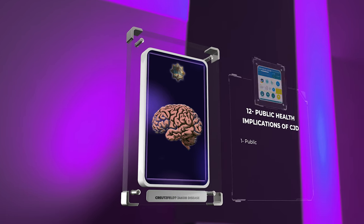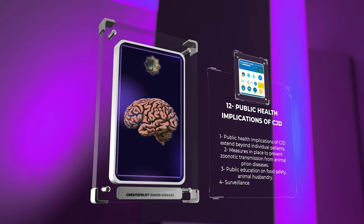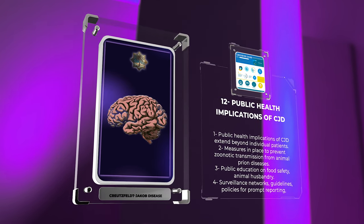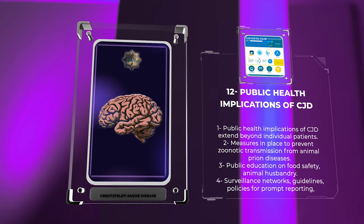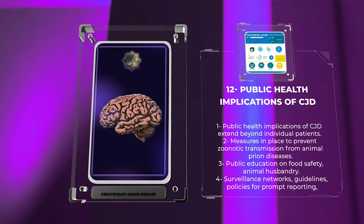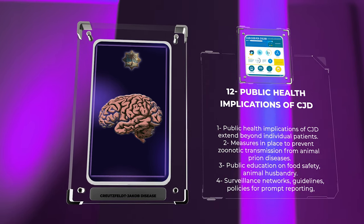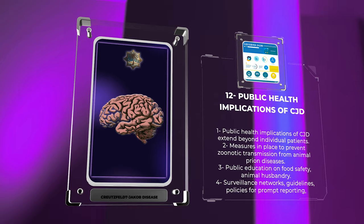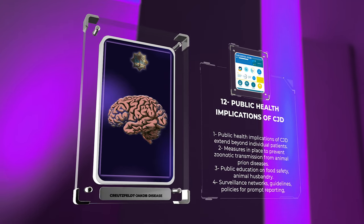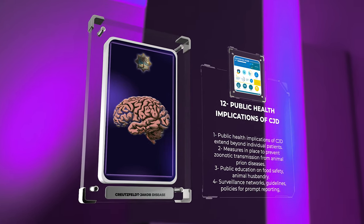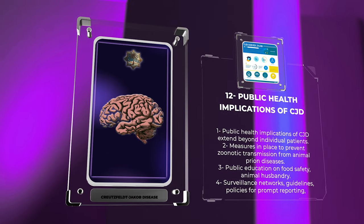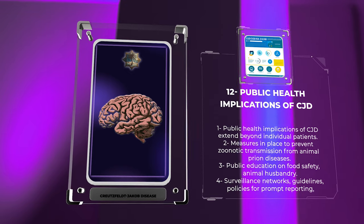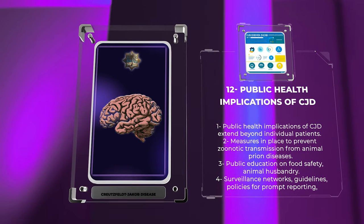The public health implications of CJD extend beyond individual patients. With the potential for zoonotic transmission from animal prion diseases, stringent measures are in place to prevent the spread of infection in both animal and human populations. Public education regarding food safety and prudent measures in animal husbandry play a vital role in minimizing the risk of transmission. Furthermore, public health agencies collaborate to create surveillance networks, disseminate guidelines, and implement policies to ensure prompt reporting, accurate diagnosis, and appropriate infection control procedures.